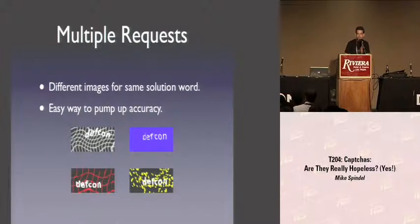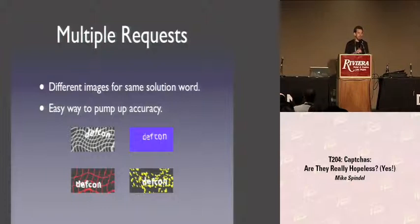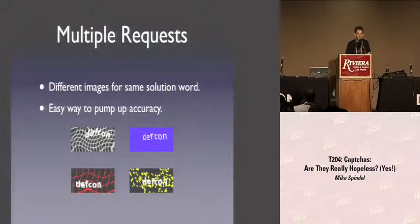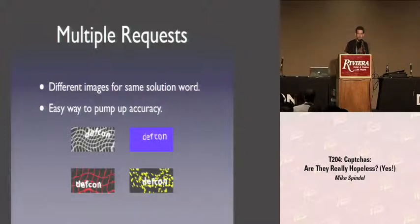Another fairly common problem is that a single image URL will always return the same letters. Because of not wanting to retain state server-side, it will randomize some parameters of the image generation, resulting in lots of different-looking versions of the same thing. This is a problem because if you're using an OCR-based attack, it allows you to very easily pump up the accuracy of your classifier.